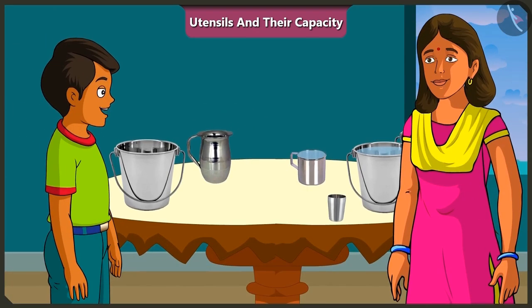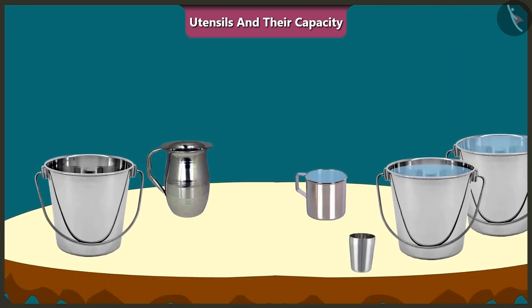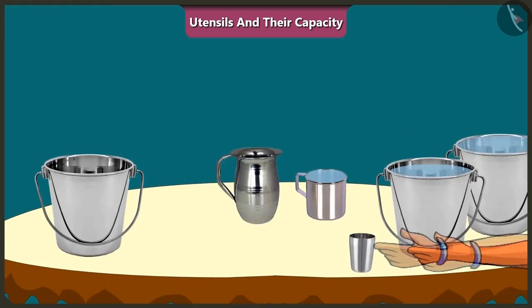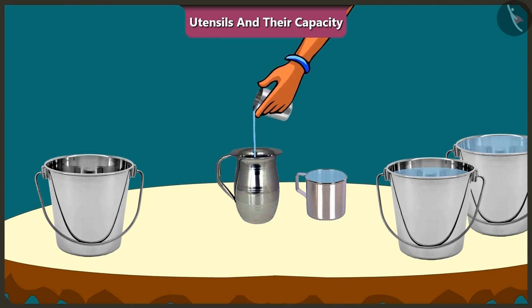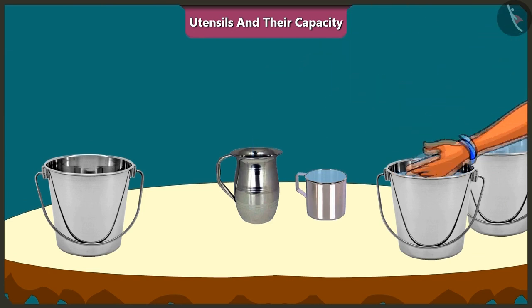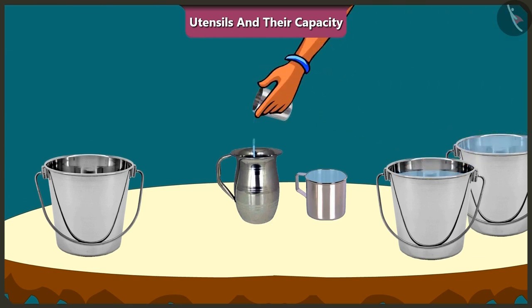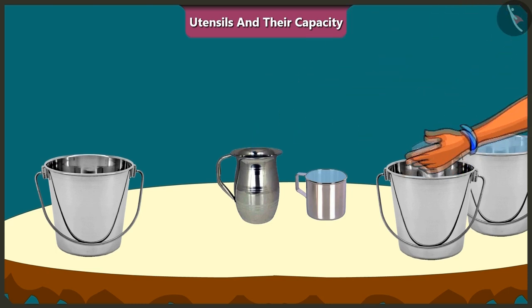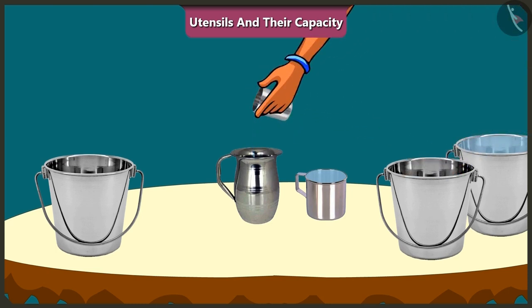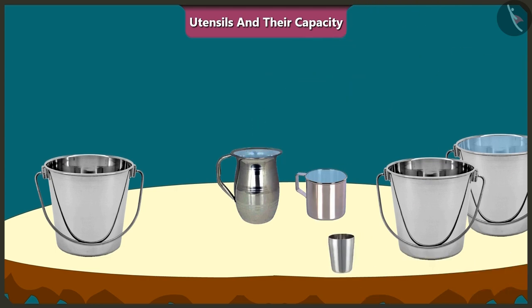Now, with the help of the same glass, we will fill this jug with water. One, two, three, four, five, six. The jug is completely filled. So, the capacity of this jug is equal to six glasses of water.